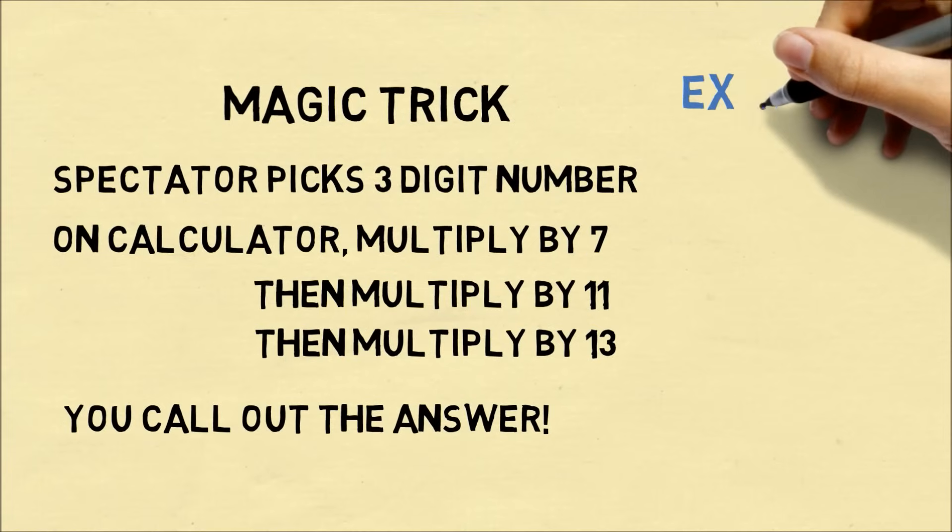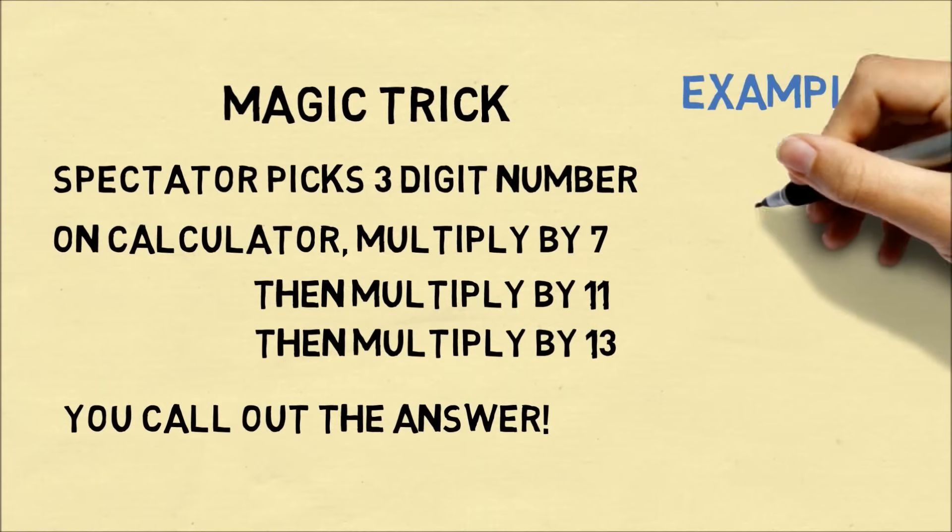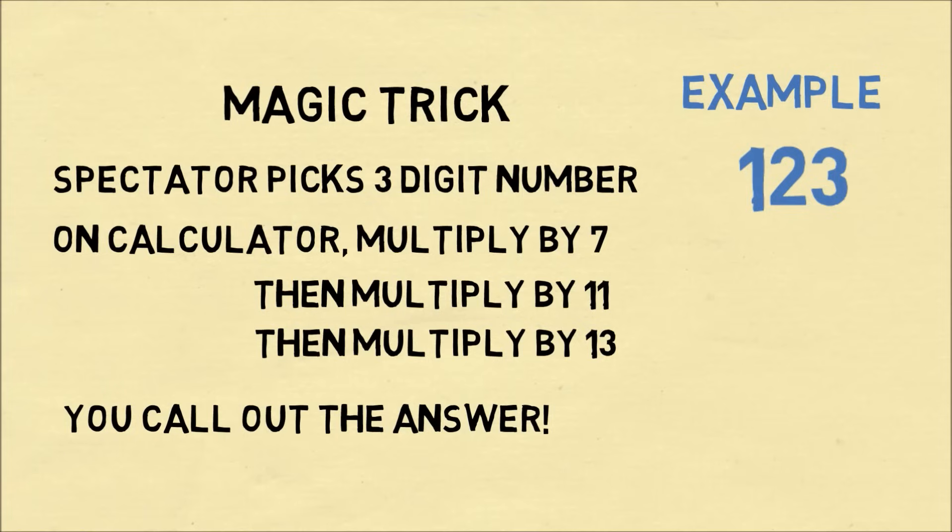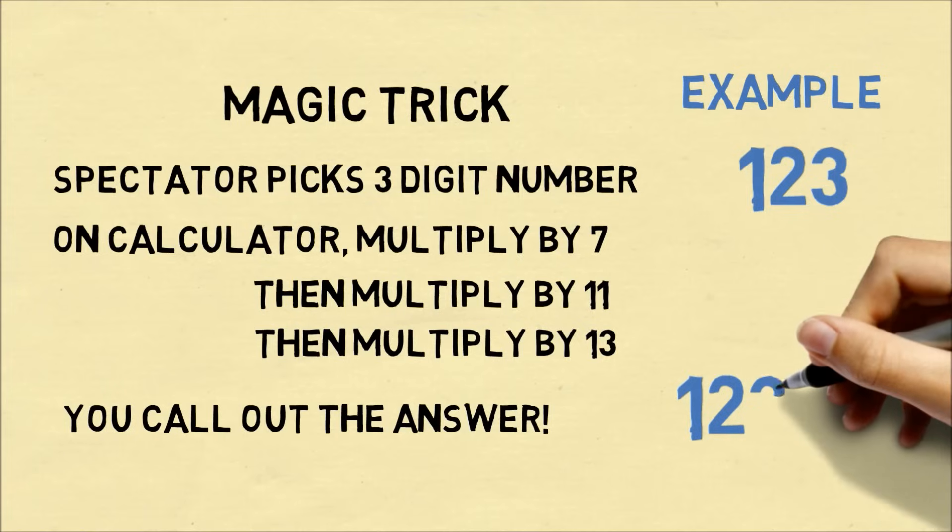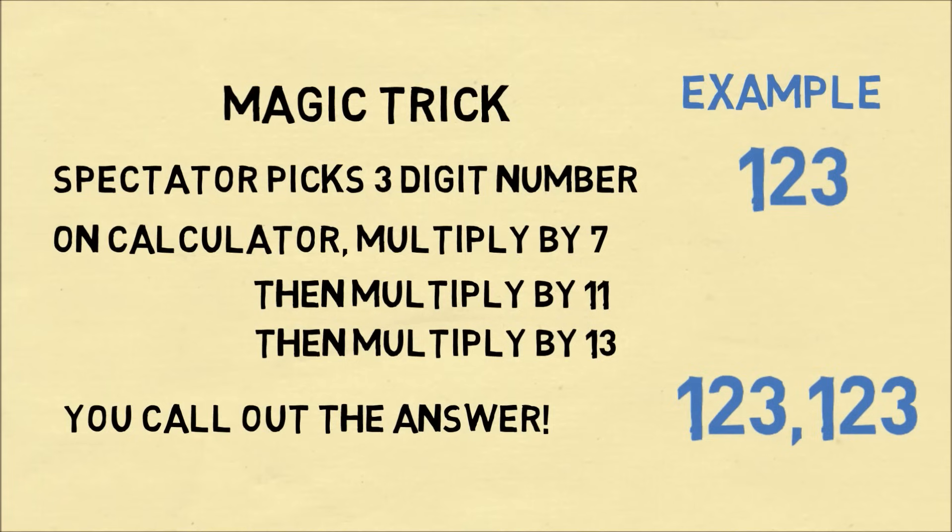So let's do an example of how this trick works. Let's say you have a spectator. The spectator picks out the number 123. So on their calculator, they're multiplying by 7, then 11, and 13, and you already know the answer is 123,123.